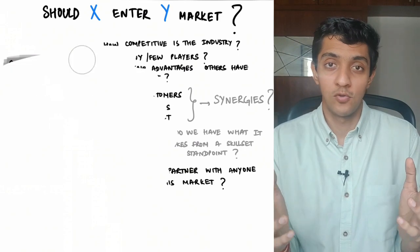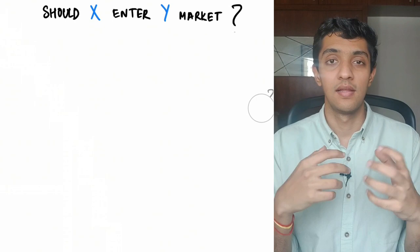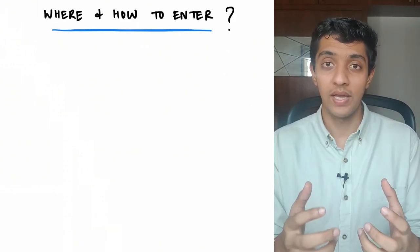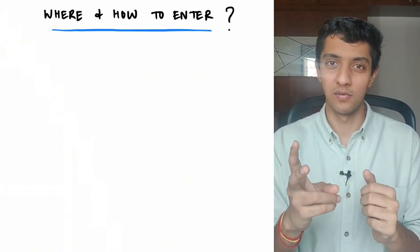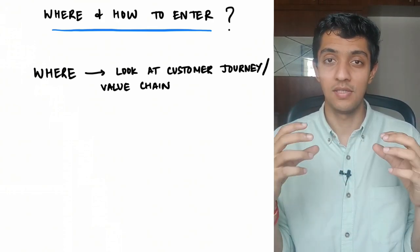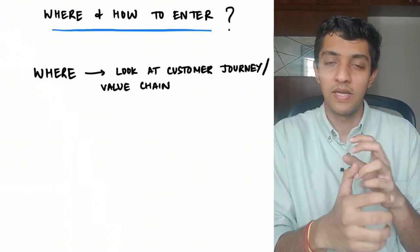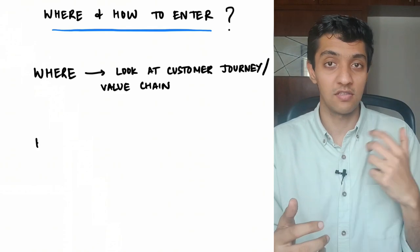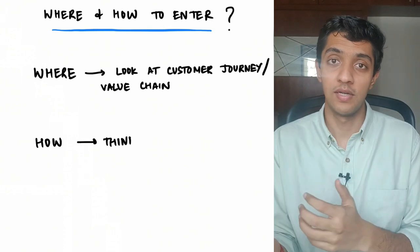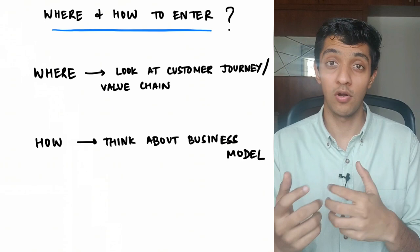If your answer is no, then the question most likely ends right there. If your answer is yes — that the company should enter this particular market — then there could be a lot of follow-up questions. One of the first follow-up questions could be: how and where should we enter this particular market? This is a two-part question. For the first part — where do you want to enter — look at the value chain or customer journey in that industry and think about which phase makes the most sense given your strengths, weaknesses, and where the gap exists. For the second part — how do you want to enter — once you've figured out which phase to target, think about the business model or operating model you really want to have there.